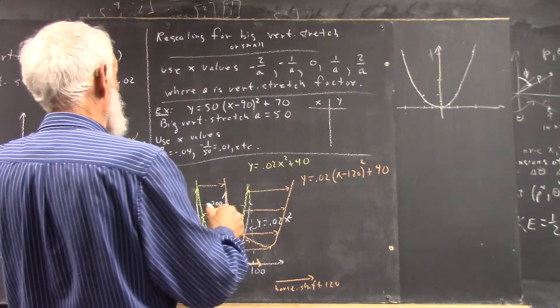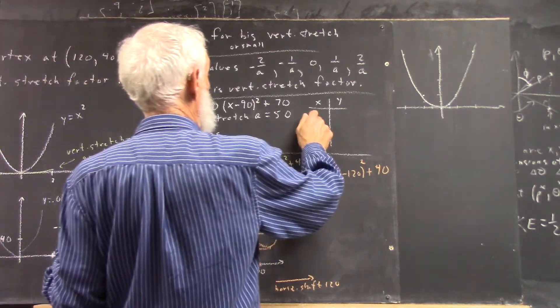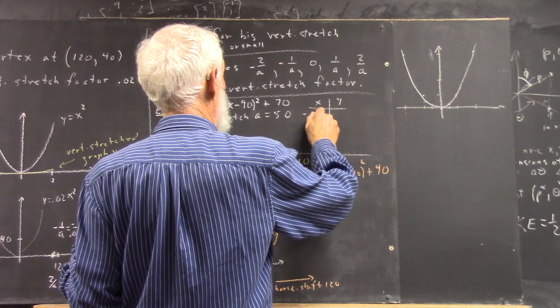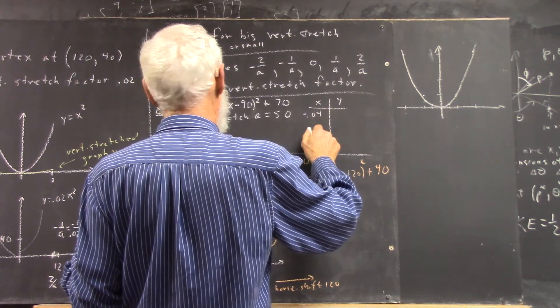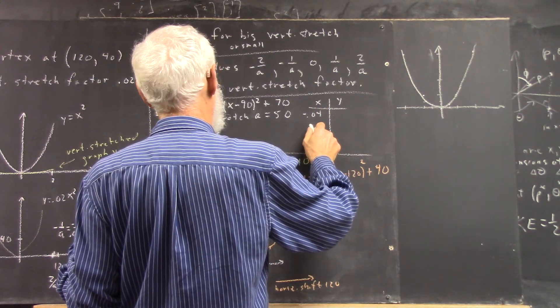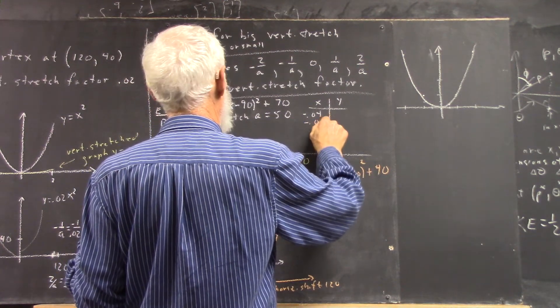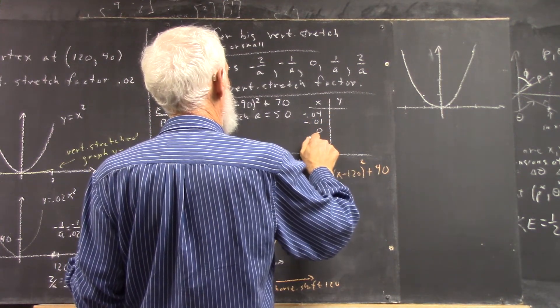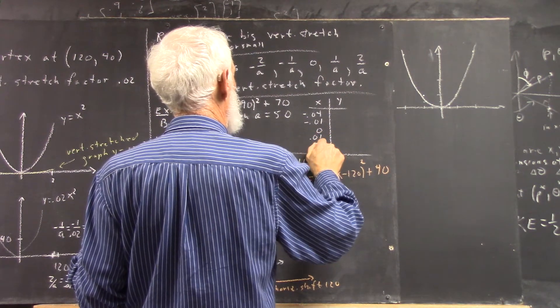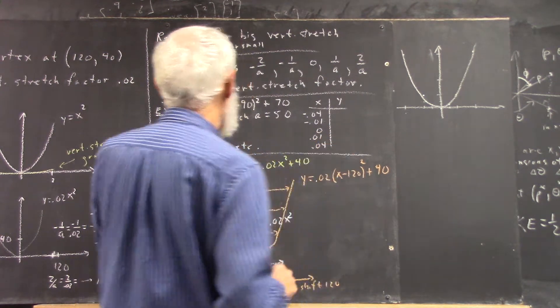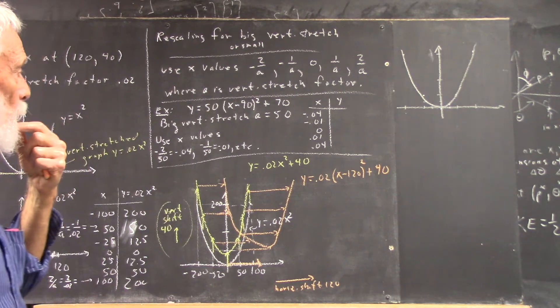Now let's see what happens with our table. Well, our table is going to be negative 0.04, negative 0.01, 0.01, 0.04.